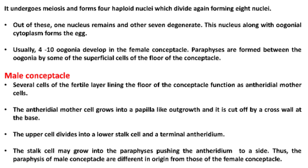In the male conceptacle, several cells of the fertile layer lining the floor function as antheridial mother cells. The antheridial mother cell grows into a papilla-like outgrowth and it is cut off by a cross wall at the base. The upper cell divides into a lower stalk cell and a terminal antheridium. The stalk cell may grow into the paraphyses, pushing the antheridium to a side. Thus, the paraphyses of the male conceptacle are different in origin from those of the female conceptacle.